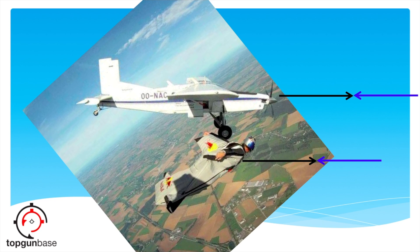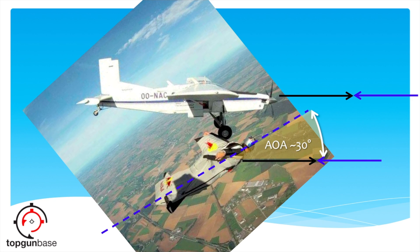Now let's add a relative wind to the picture, which is always opposite of the flight path vector. We'll also add a chord line on Cedric — that's the leading edge to the trailing edge. From here, we have everything to visualize AOA, which is the angle between the chord line and the relative wind. And now it's totally obvious to see how completely different these two wings are flying. The aircraft is flying at essentially zero angle of attack, and the wingsuit, by comparison, is plowing along at high AOA and high dihedral.